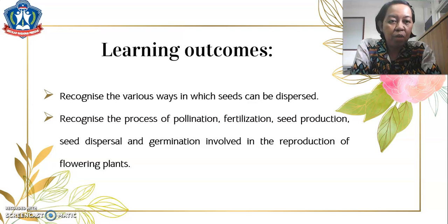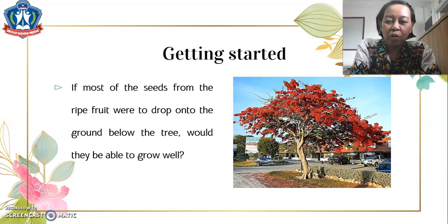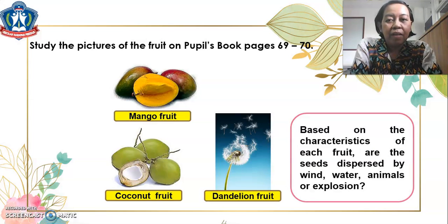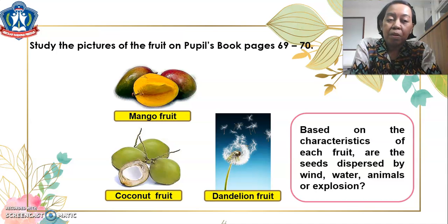To get started, look at the picture. If most of the seeds from the fruit were to drop onto the ground below the tree, would they be able to grow well? What do you think? Study the pictures of the fruit on your People's Book. We have here mango fruit, coconut fruit, and dandelion fruit. Based on the characteristics of each fruit, are the seeds dispersed by wind, water, animals, or explosion? Take your time to answer, children, and don't forget to write it in Google Classroom.